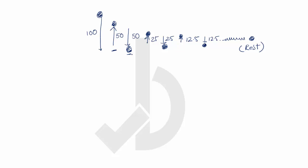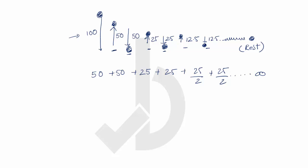Here we see a pattern: 50, 50, 25, 25, 12.5, 12.5, and so on. Excluding the initial 100, if we take the numbers 50 + 50 + 25 + 25 + 25/2 + 25/2 and so on to infinity, we can write this as 2 times (50 + 25/2 + 25/4 + ...) and so on to infinity.